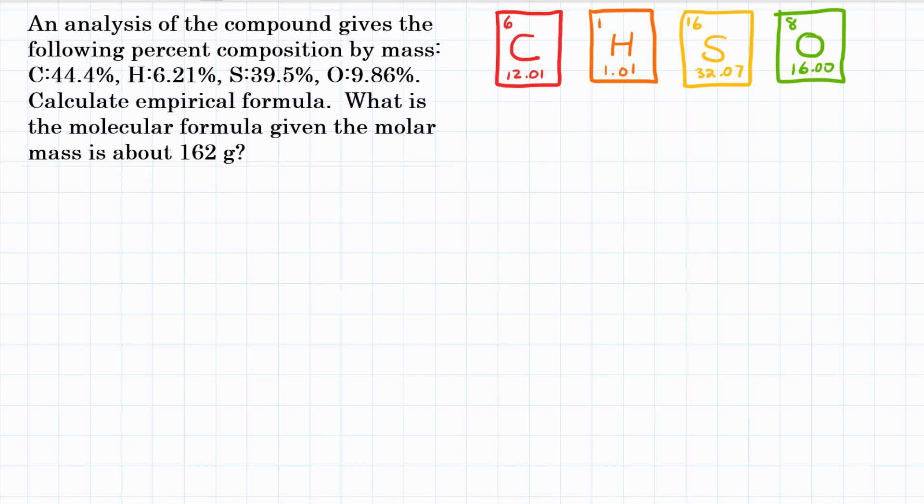For carbon, 44.4%, hydrogen, 6.21%, sulfur, 39.5%, and oxygen, 9.86%. Calculate empirical formula, and then what is the molecular formula given the molar mass is about 162 grams. So this is an empirical formula calculation problem.